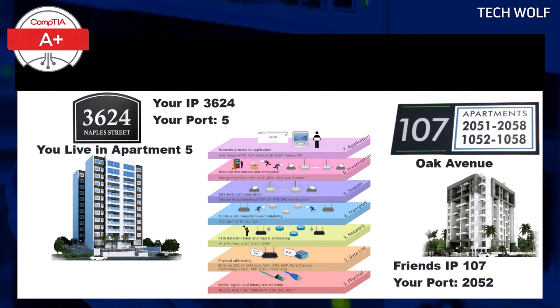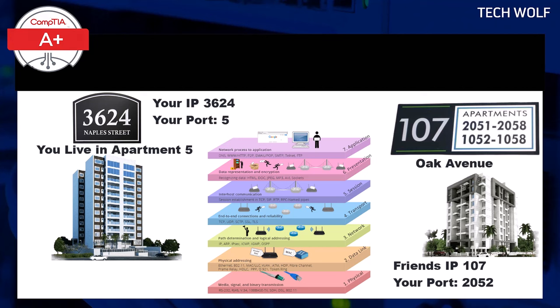When you first step out and get on a bus, it's like data leaving your device at the physical layer. As you move through the city and change transport modes, your journey gets more structured — like how data passes through various network layers such as the data link and network layers as it travels through routers, switches, and cables. Finally, when you get off the tram and walk directly to the building, you are reaching your destination at the application layer — the final step in delivering the message.